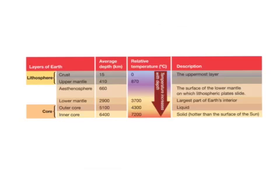On the topic of it being hotter than the sun down at the inner core, here is a chart of all of the temperatures that take place in Earth's layers. The first layer, the crust, has a normal temperature of the Earth. The upper mantle goes to 870 degrees Celsius, already enough to evaporate water. The asthenosphere is the same, because it's just below.